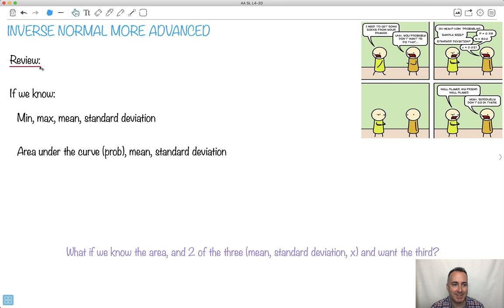Alright, so let's just revise again. If we knew the mean, the minimum, the maximum, the standard deviation, what do we do then? Well, we use normal CDF. And what does that tell us? That tells us the probability. So that was very useful, that's what this told us.